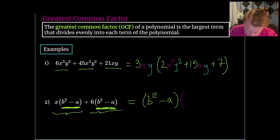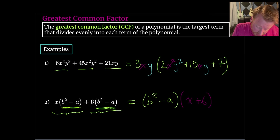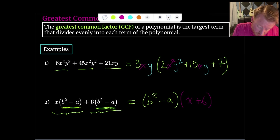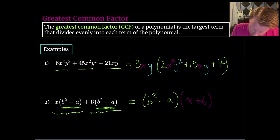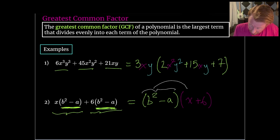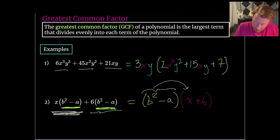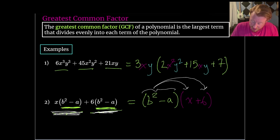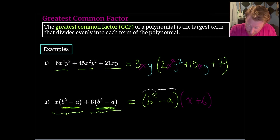What is in common is this b² minus a, and then I just think about what is left behind, which is going to be x plus 6. Using the distributive property, I'm taking the whole b² minus a term and distributing it to the x — we get what we started with — and distributing it to the 6, we get back to where we started. So we can check our work that way, and we're feeling good that that is the factorization.